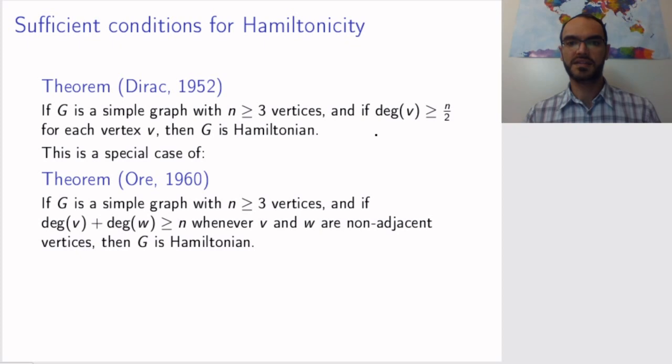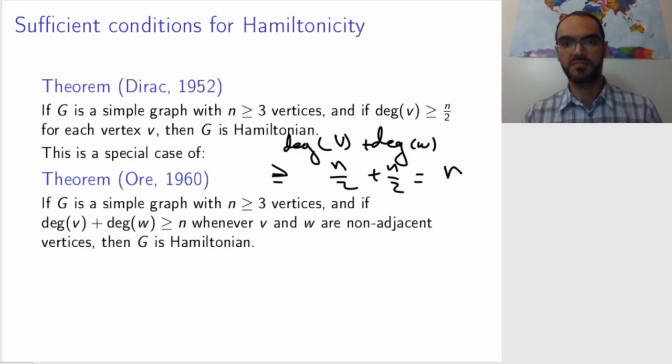In Dirac's case, if you take any v and w and sum up the degrees for any two vertices, adjacent or not, then these are each n/2 at least, so the sum is at least n. If you can prove Øre's theorem, which is much more general than Dirac's, then Dirac's theorem will follow.